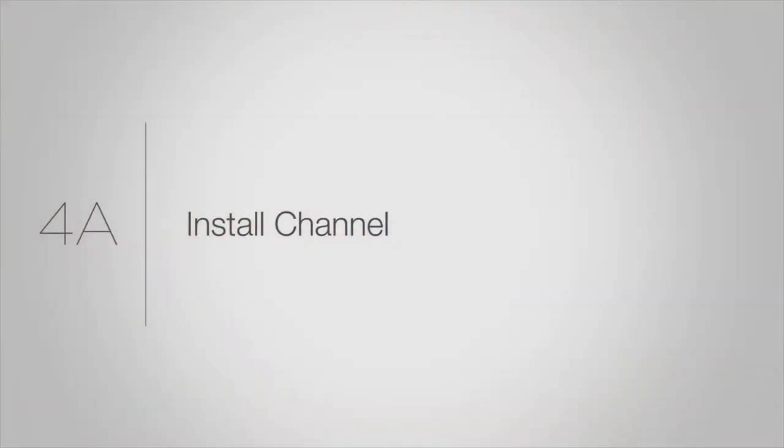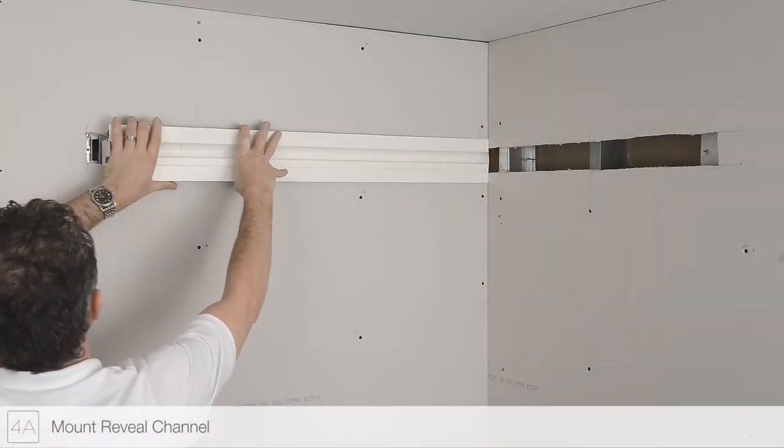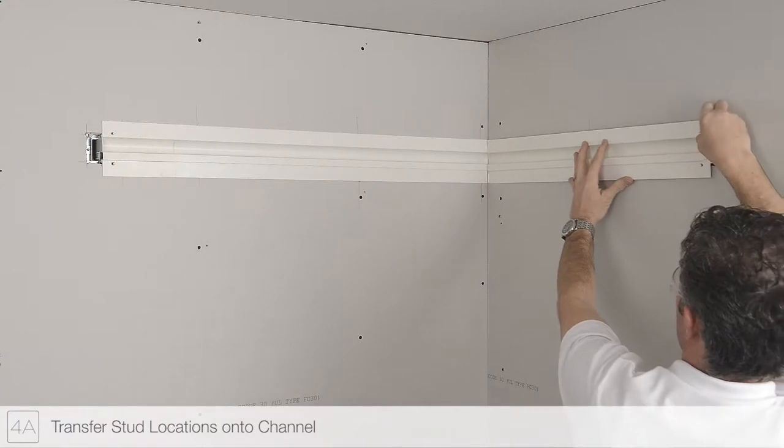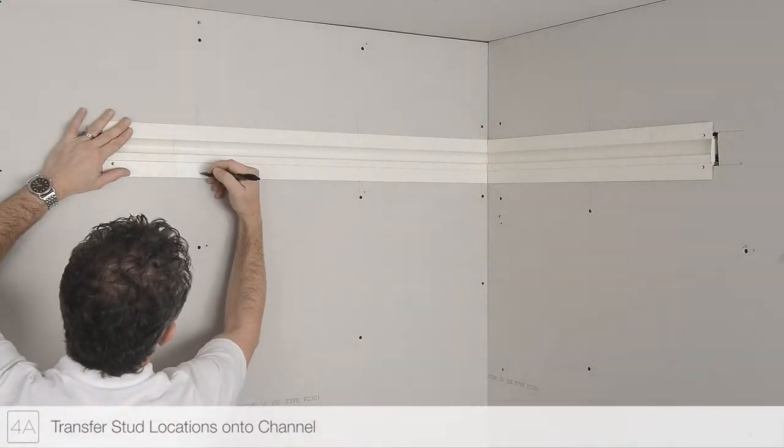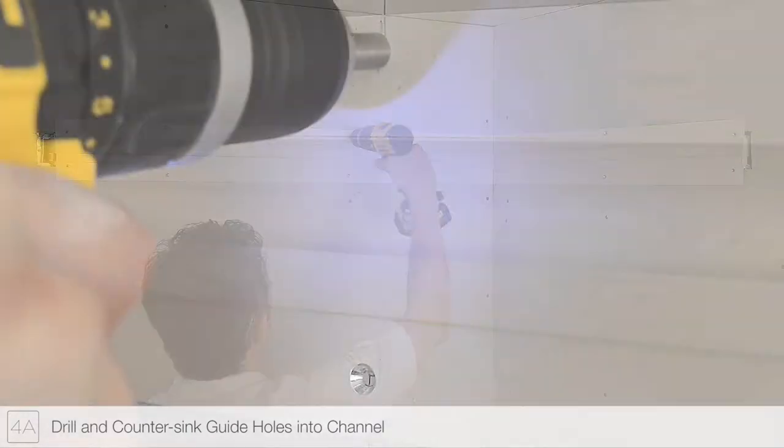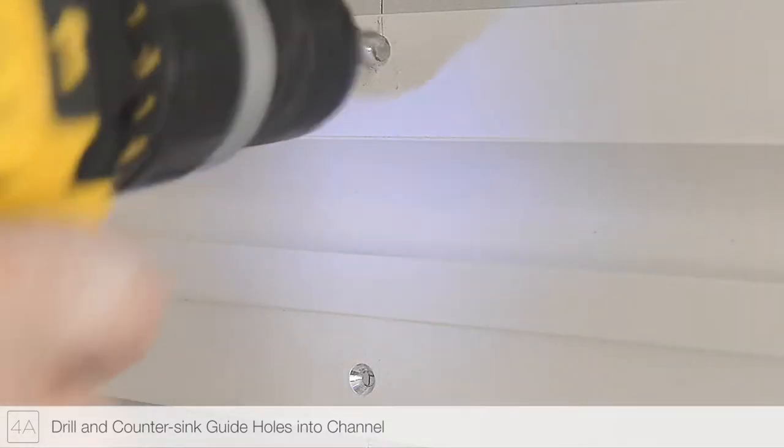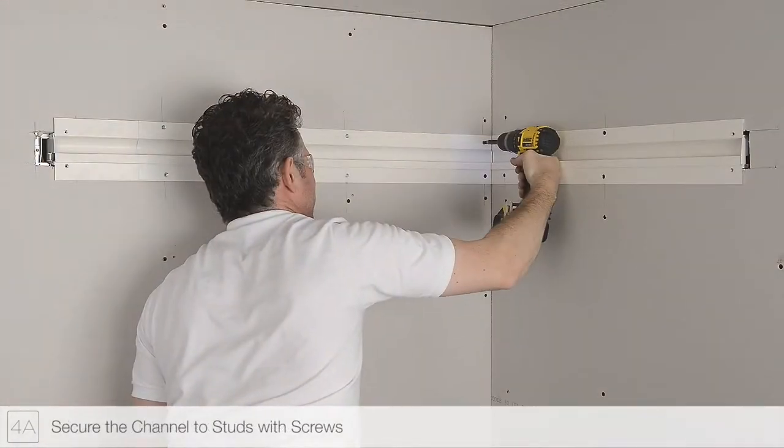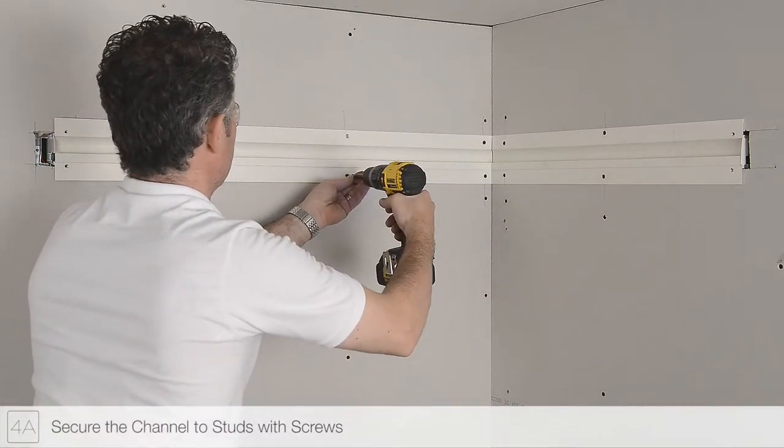Step 4A: Position the channels of reveal into the drywall cutout. Transfer the stud location markings on the channel. Drill and countersink guide holes using the countersink bit provided. Secure the channel to the drywall studs using screws.